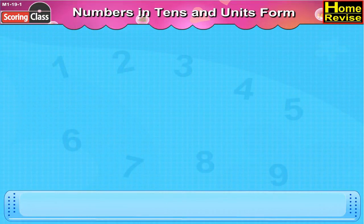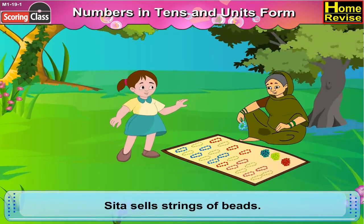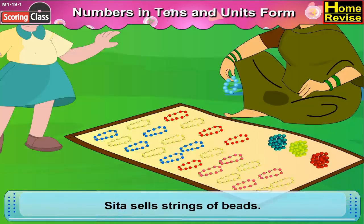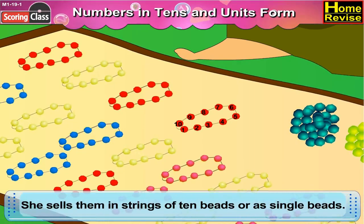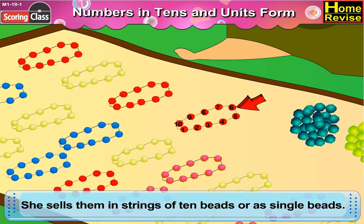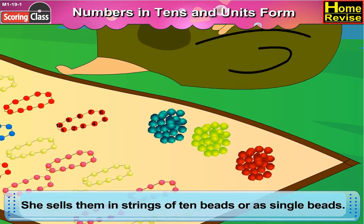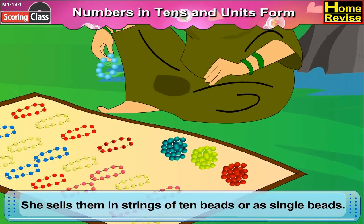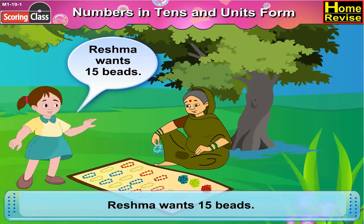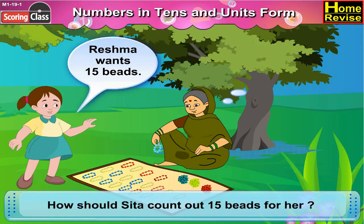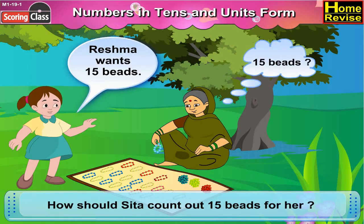Numbers in Tenths and Units Form. Sita sells strings of beads. She sells them in strings of 10 beads, as well as single beads. Veshma wants 15 beads. How should Sita count out 15 beads for her?